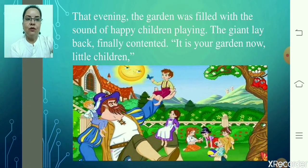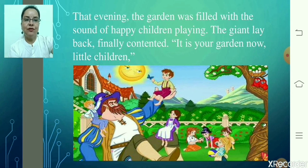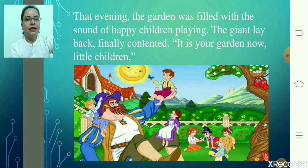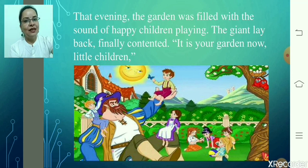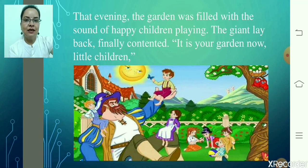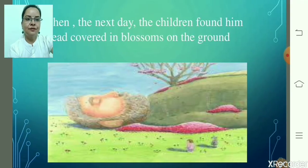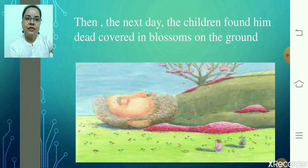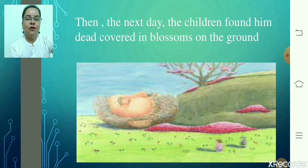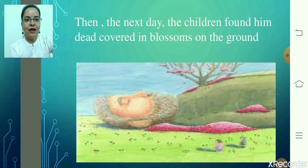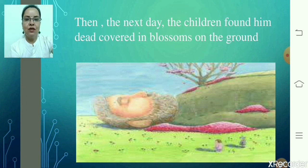That evening the garden was filled with the sound of happy children playing. The giant lay back, finally contented — contented meaning happy and satisfied. 'It is your garden now, little children,' he said. So now he allowed all the children to come to his garden and was very happy to share it with them. Then very sadly, the next morning the children found that the giant had died, and his body was all covered with flowers.